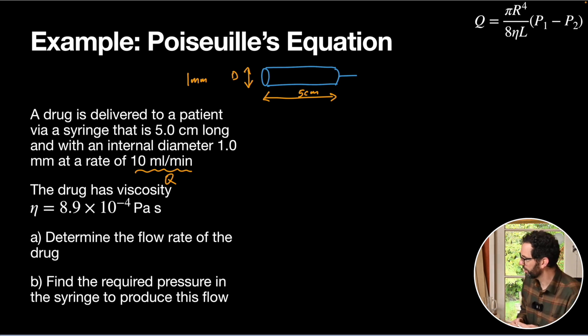The drug has viscosity of eta, and we have to determine the flow rate of the drug, and also find the pressure that we'd require to apply to our syringe in order to make this flow happen. So let's see what we need to do here. We've actually been given the flow rate Q, so our first job for part A is just to find out what Q is in our standard units.